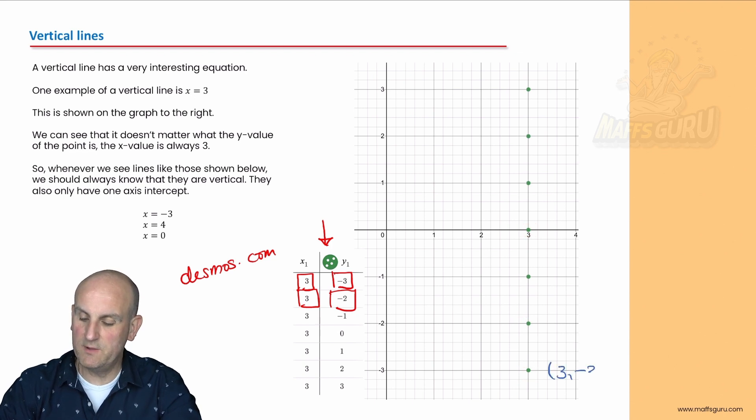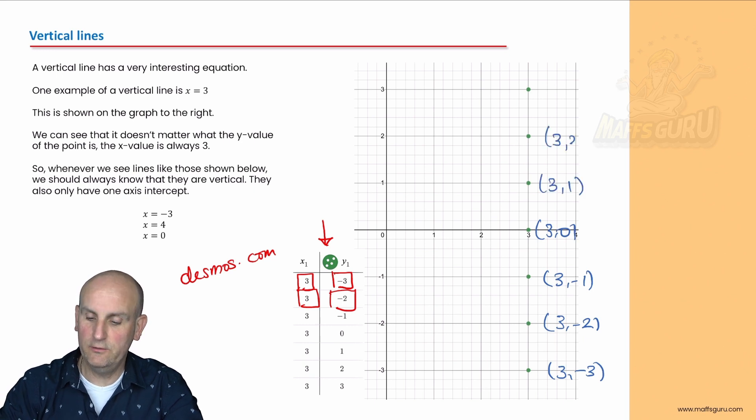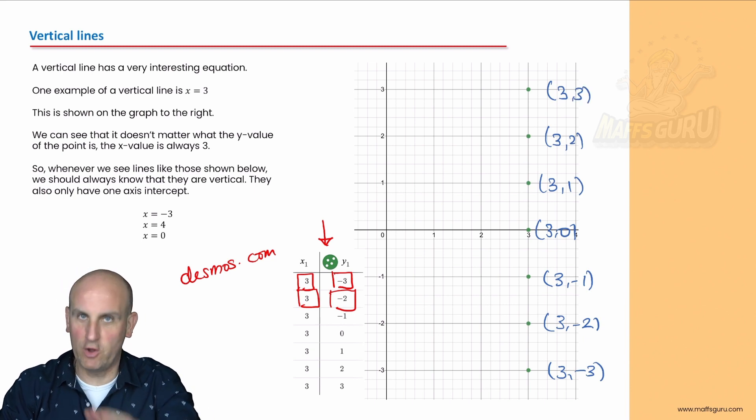This point here is 3 minus 3, this point here is 3 minus 2, this point here 3 minus 1, 3, 0, 3, 1, 3, 2, 3, 3.